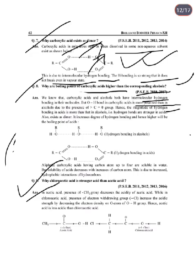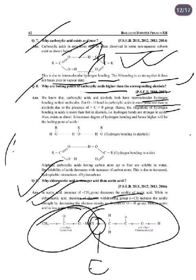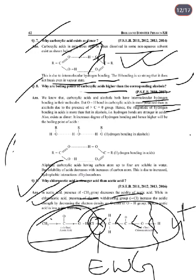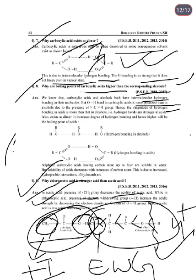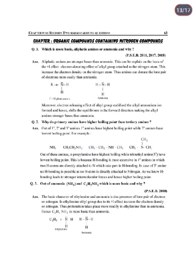Next: Why is chloroacetic acid a stronger acid than acetic acid? In acetic acid, the CH₃ group has a +I (electron-releasing inductive) effect, which increases electron density on oxygen, making the O–H bond stronger and harder to break, thus reducing acidity. In chloroacetic acid, the Cl atom is an electron-withdrawing group (−I effect), which withdraws electrons from oxygen, making the O–H bond weaker and easier to break, releasing H⁺ more easily, thus making it a stronger acid.